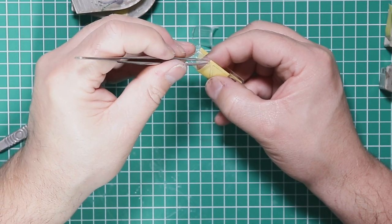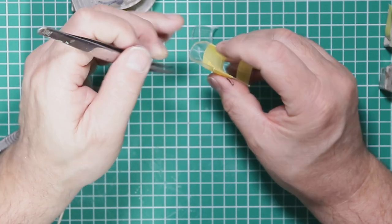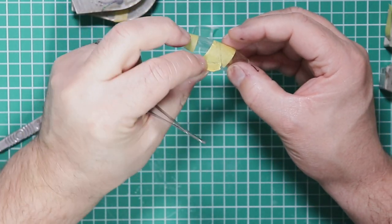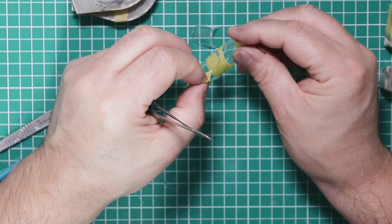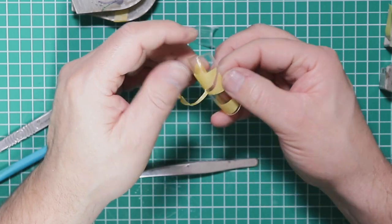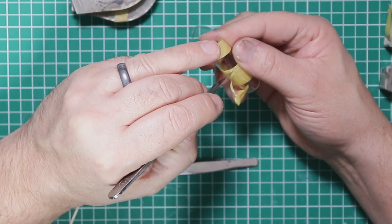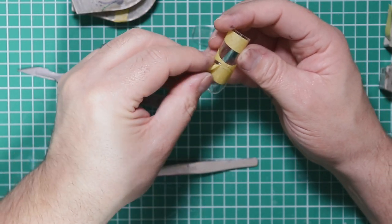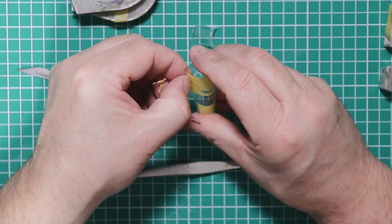Then we can peel away the masking tape, just making sure we don't lift anything up. I've not quite got the cuts to join there so we'll just join those up and remove the excess.